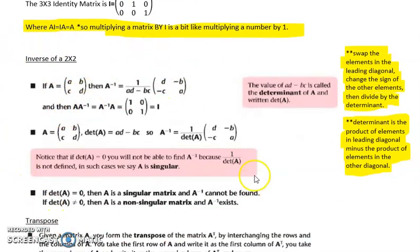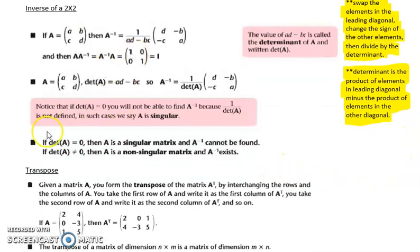To do an inverse of a 2 by 2, you swap the elements in the leading diagonal, change the sign of the other elements, then divide by the determinant. The determinant is the product of the elements in the leading diagonal minus the product of the elements in the other diagonal. A very important word is singular. If the matrix is singular, the determinant is 0 and there's no inverse. You must learn that.